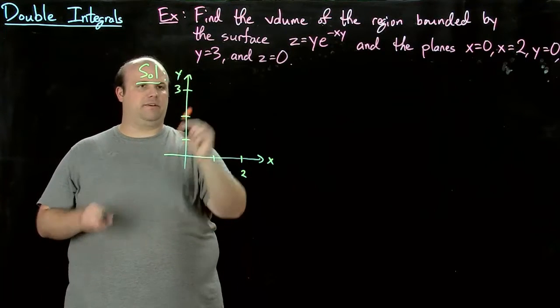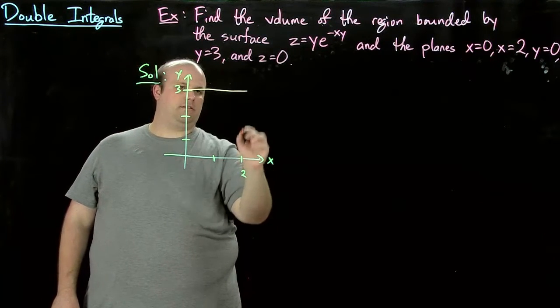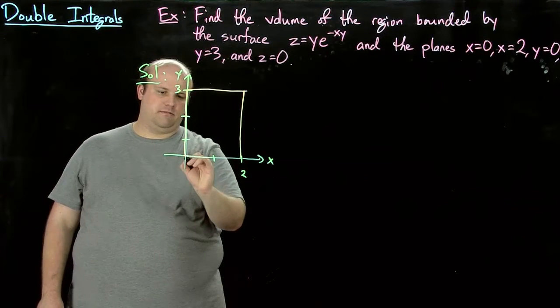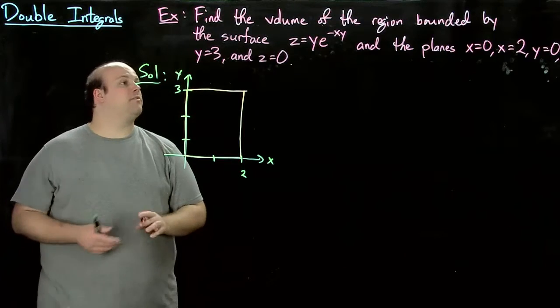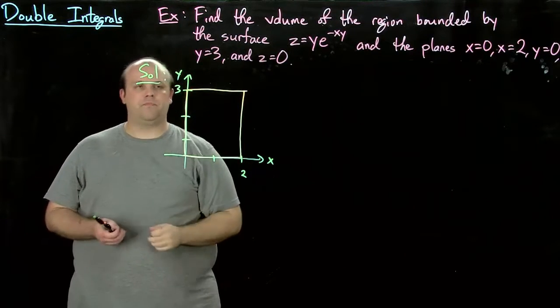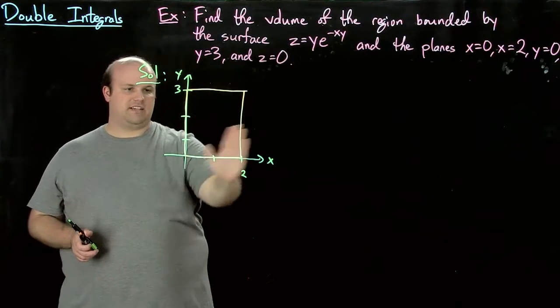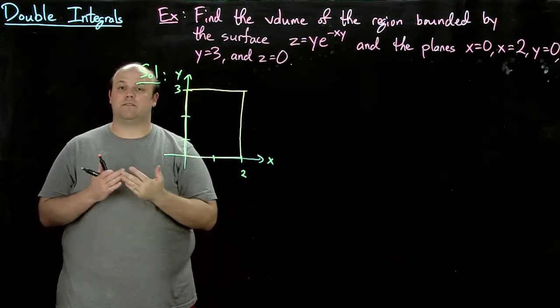It's just going to be here's y equals 3, here's x equals 2, here's x equals 0, and y equals 0. So we just get this rectangle here. The planes are these big things that go in and out here. And what is z equals 0? Well, z equals 0 is actually this picture right here. You can imagine z equals 0 is the floor.